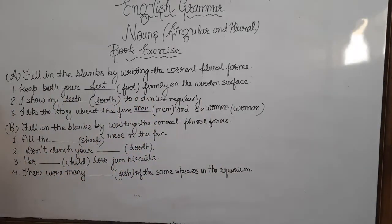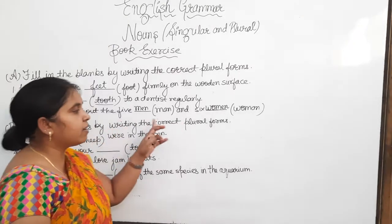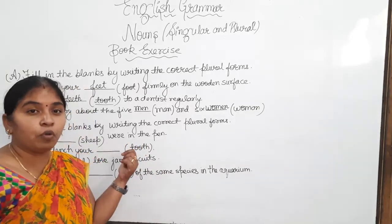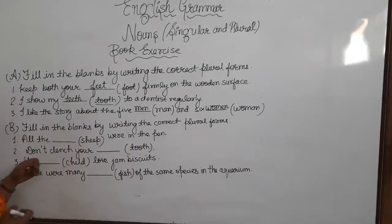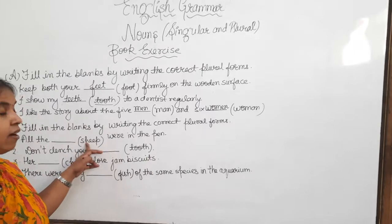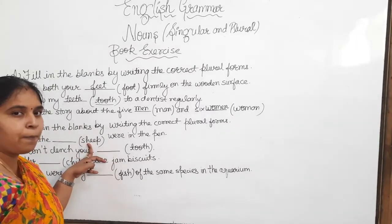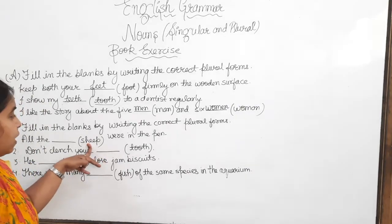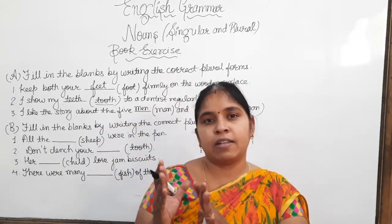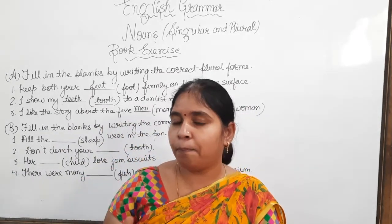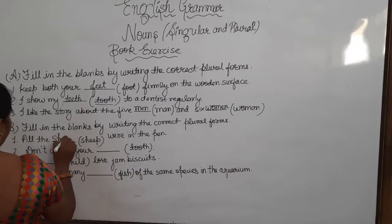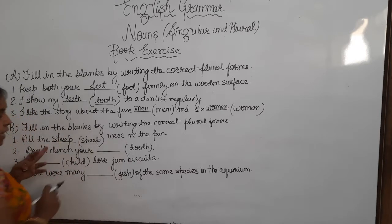Now the next exercise is also filling in the blanks by writing the correct plural forms. Again, the singular nouns are in brackets and we have to do the conversion. The first sentence is: 'All the dash were in the pen.' The word in the bracket is 'sheep.' As per the rule we have already learnt, the plural of sheep is 'sheep' — S-H-E-E-P. There will be no changes.